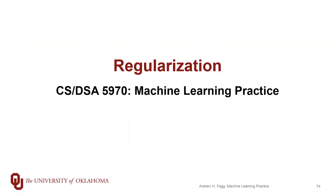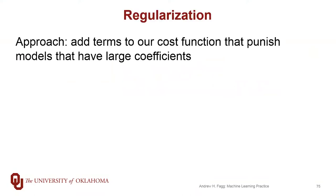We've been talking about this idea that maybe we want to add some other constraints to the selection process for the parameters for our model. One possible set of constraints is something called regularization. The general idea is that we don't want to select arbitrary slopes for our linear models, but that we prefer slopes that are actually much more shallow. This regularization approach adds additional terms to our cost function that punishes cases where we've selected very large coefficients.